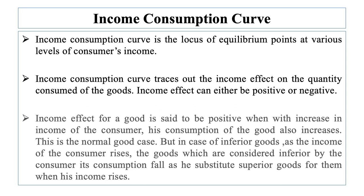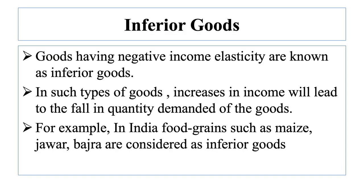But in case of inferior goods, as the income of the consumer rises, the consumption of goods considered inferior falls as he substitutes superior goods for them. For example, in India, food grains such as maize, jowar, and bajra are considered inferior goods, and therefore when income rises, people shift to the consumption of superior food grains like wheat and rice. Similarly, most Indian people regard vanaspati ghee to be inferior, and therefore as they become richer, they reduce its consumption and use desi ghee instead.